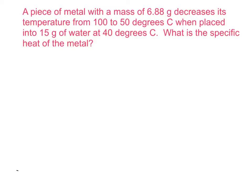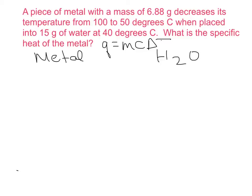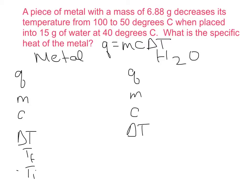In this problem we are given two sets of information: information about our metal and information about our water. We know this is a problem where we use q equals mc delta T, and we are going to need that information for both substances. For our metal: q = mcΔT, where ΔT is T final minus T initial. The same equation applies for the water.